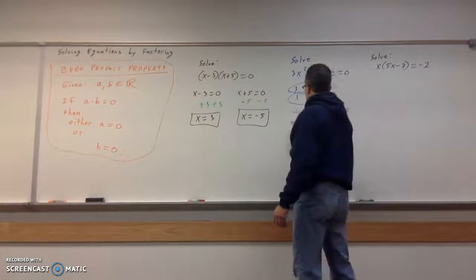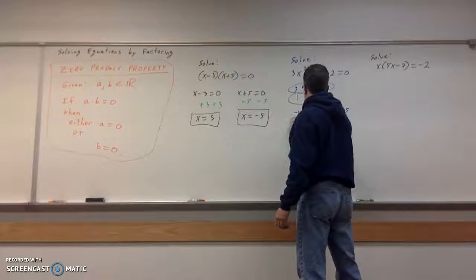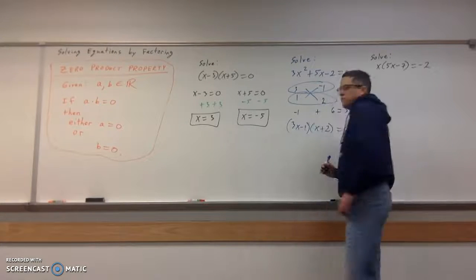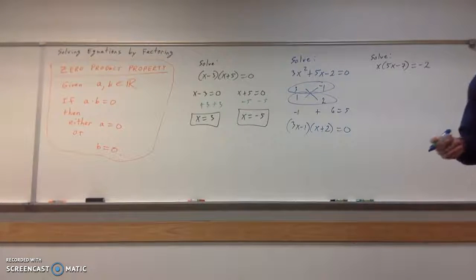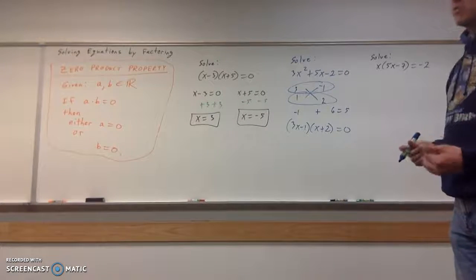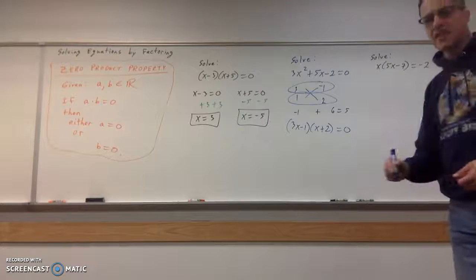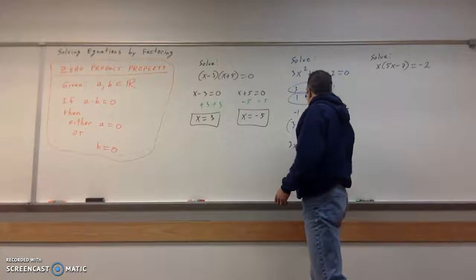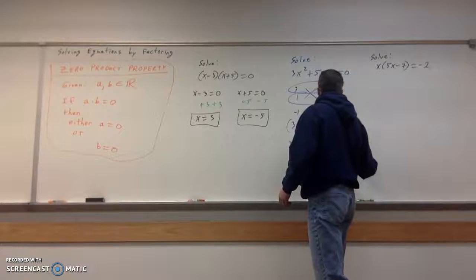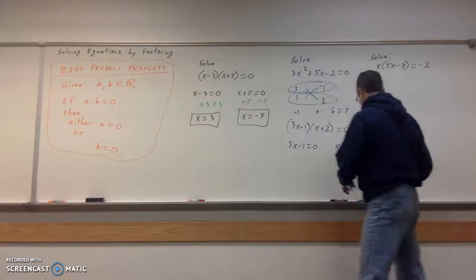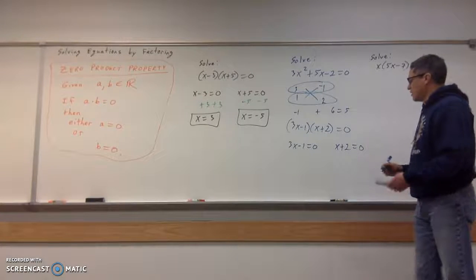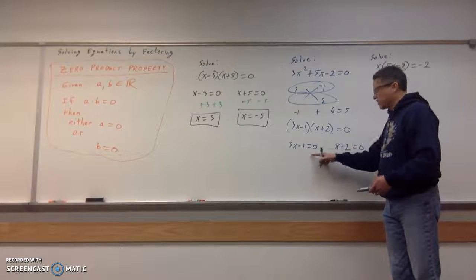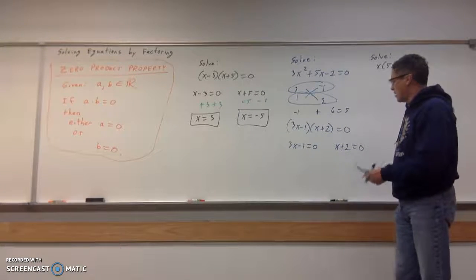So my factors are going to be (3x - 1) and (x + 2) equals zero. So this goes back to my comment at the beginning of this video. If you don't know how to factor at this point, you're toast. And here's a classic example as to why. So let's take our 3x minus one equals zero, and then our x plus two equals zero. And hopefully you've figured this out already. You can probably pick out your answers from this step rather than showing these last couple steps I'm going to show. I'll explain how in a minute.